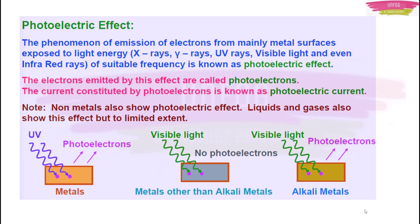Let us go deeper into photoelectric effect. It is the phenomenon of emission of electrons from mainly metal surfaces exposed to light energy. This light energy could be X-rays, gamma rays, UV rays, visible light, or even infrared rays — electromagnetic radiations. The only condition is that the light must be of suitable frequency. The electrons emitted by photoelectric effect are called photoelectrons, and the current formed by these photoelectrons is known as photoelectric current.